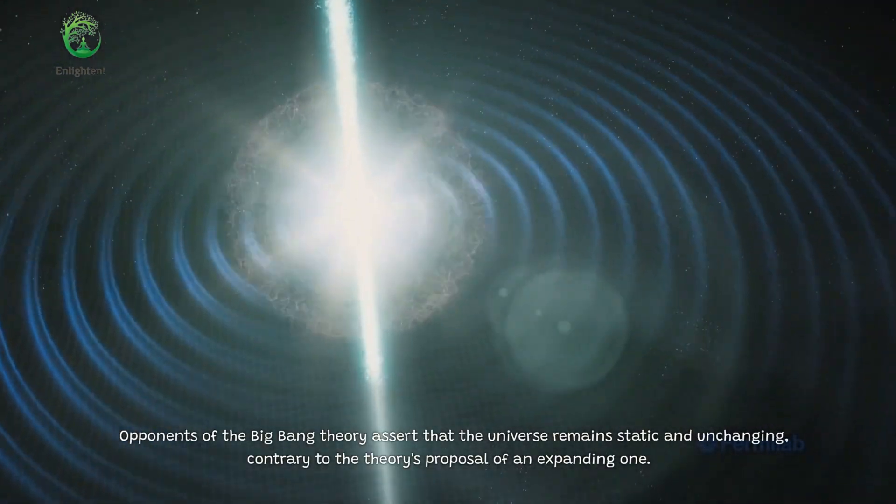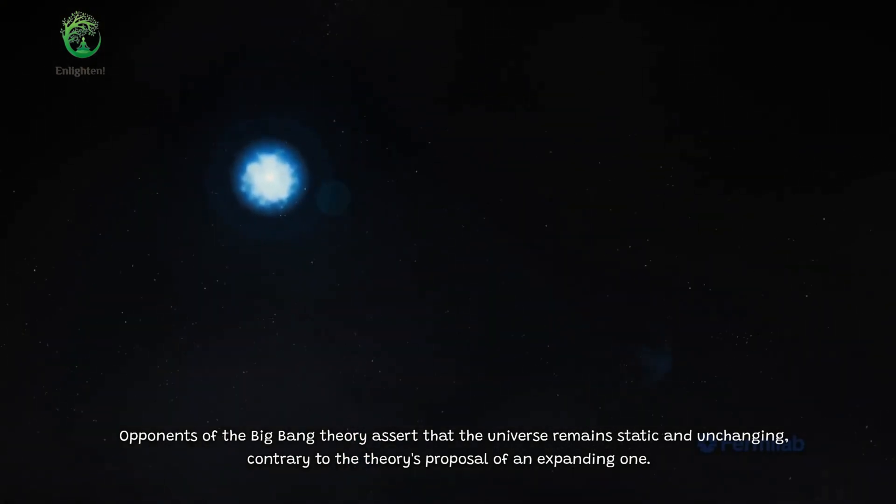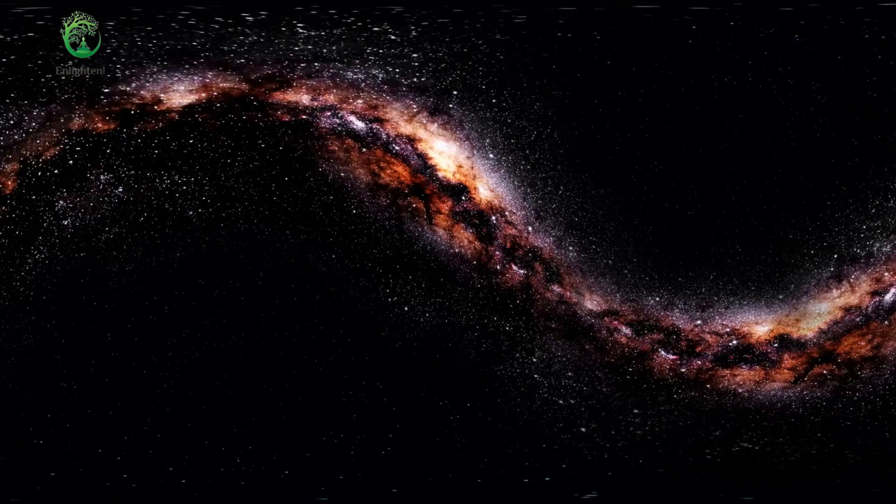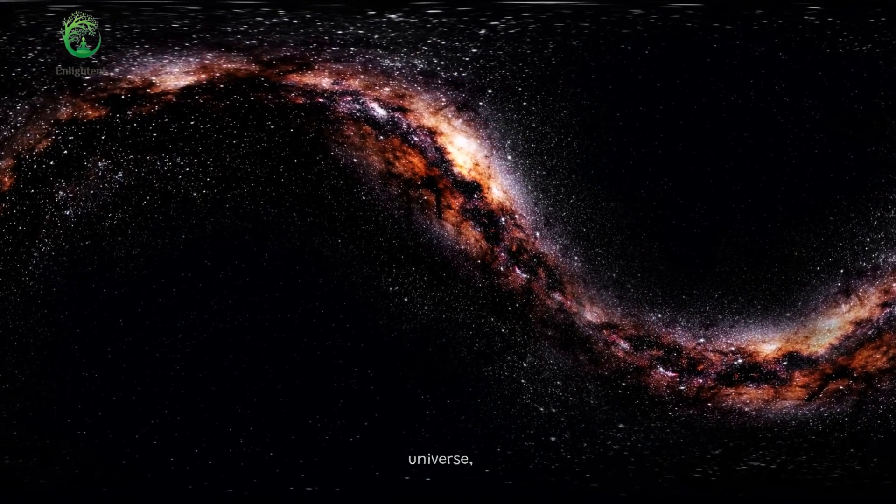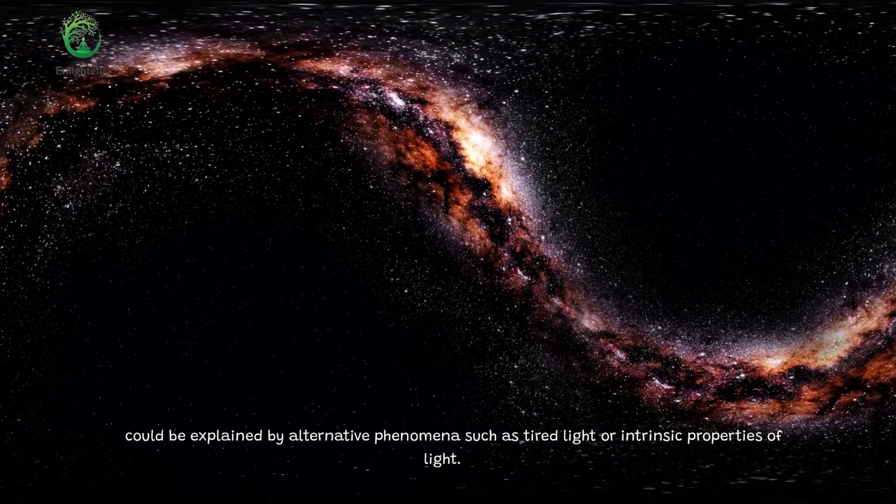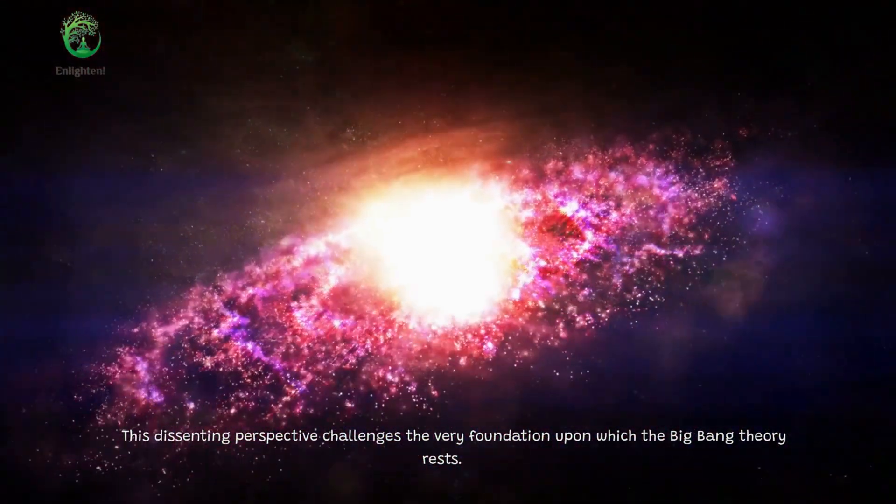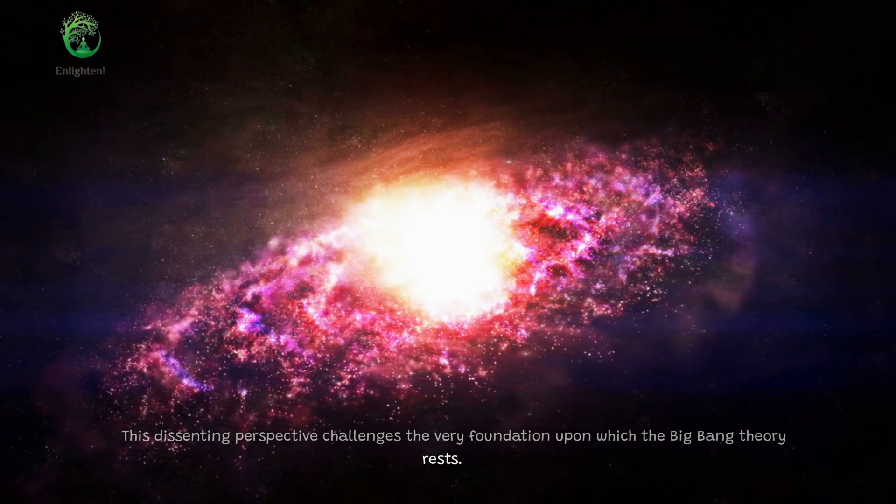Opponents of the Big Bang Theory assert that the universe remains static and unchanging, contrary to the theory's proposal of an expanding one. They argue that the observed redshift of galaxies, traditionally attributed to an expanding universe, could be explained by alternative phenomena such as tired light or intrinsic properties of light. This dissenting perspective challenges the very foundation upon which the Big Bang Theory rests.